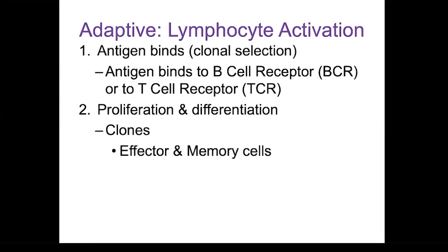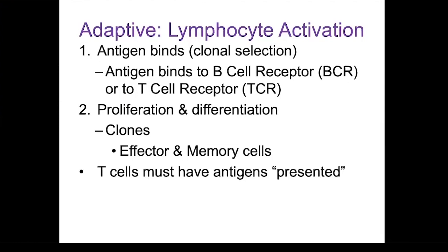All of the daughter cells are clones and they will begin to specialize or differentiate into two lines of cells. They all have the same receptors for the antigens, but some will be effector cells and some will be memory cells. Most of the cells will be effector cells. An effector cell is the cell that carries out the function of that immune response — eliminating the antigens.